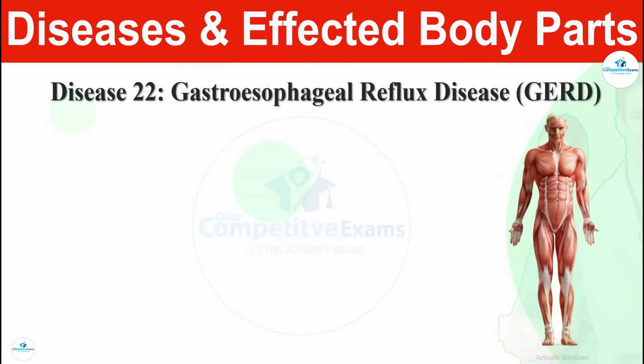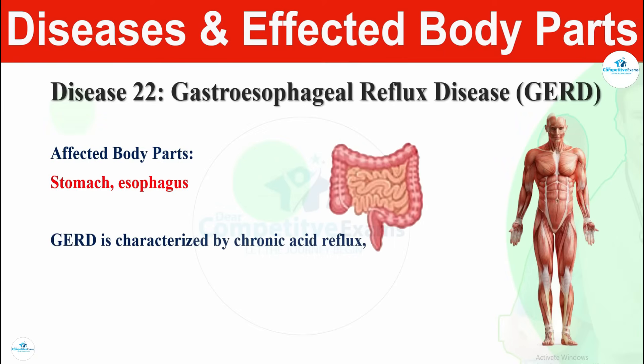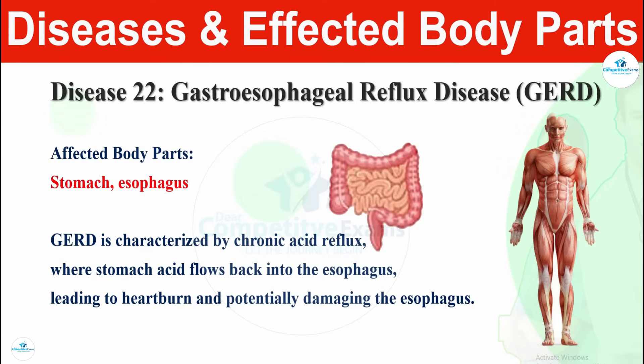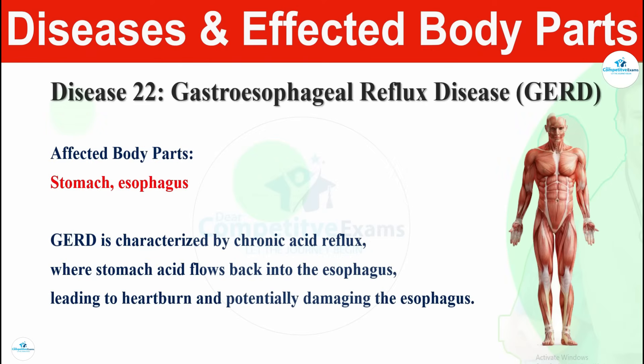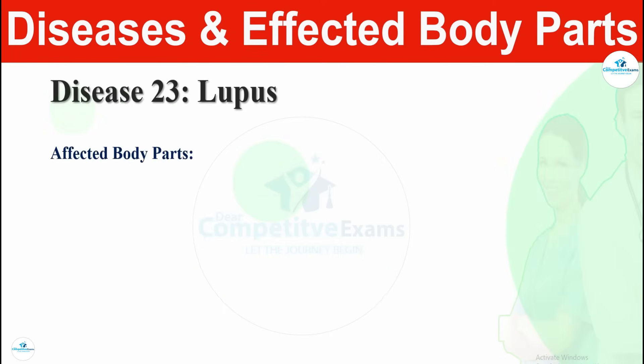Disease number twenty-two is gastroesophageal reflux disease, known as GERD. GERD affects the stomach and esophagus. GERD is characterized by chronic acid reflux, where stomach acid flows back into the esophagus, leading to heartburn and potentially damaging the esophagus. The situation where stomach acid flows back into the esophagus causes a heartburn-like condition.